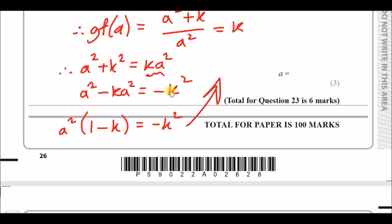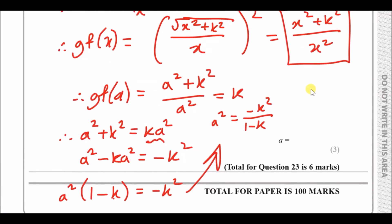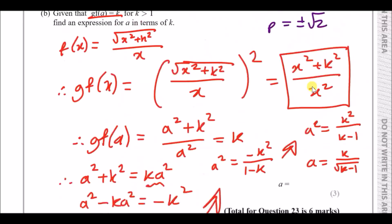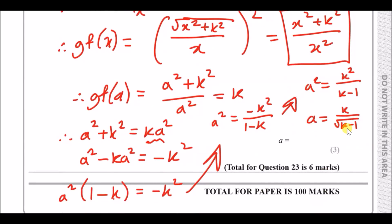Flip the sign by rotating the position: a squared equals k squared over (k minus 1). Square root both sides: a equals the square root of k squared over (k minus 1), which simplifies to k over the square root of (k minus 1). Since k is positive, this is the final result. Done!